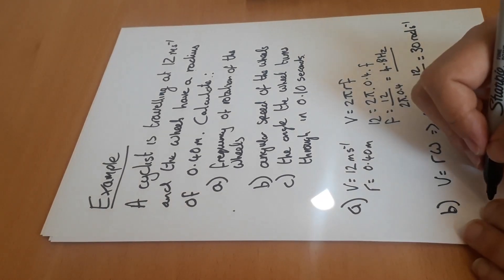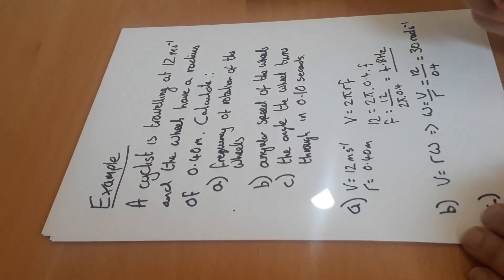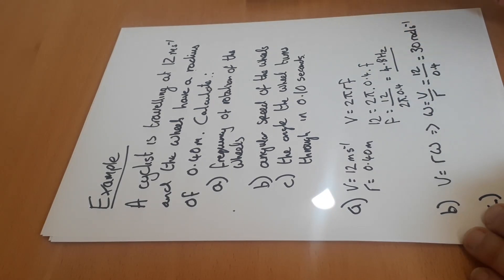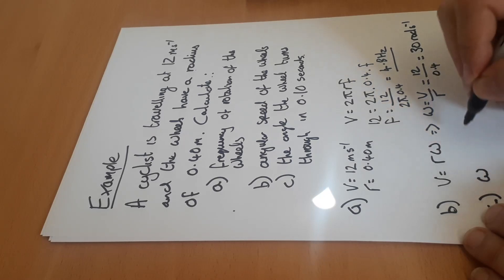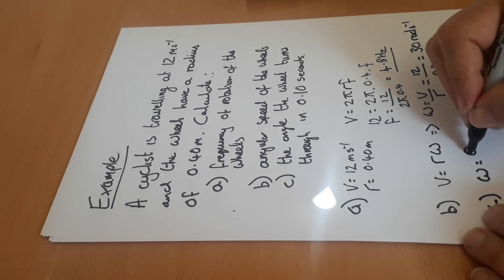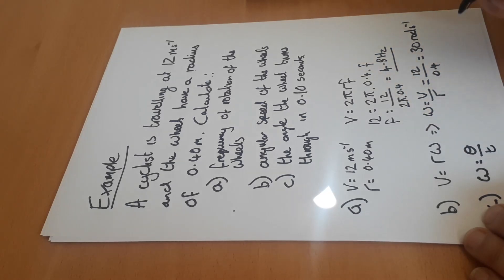Part c, the angle the wheel turns through in 0.1 seconds. Well again from four minutes earlier, we know that angular velocity, angular speed, is equal to the angle divided by the time.